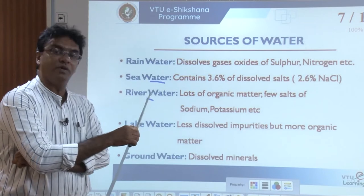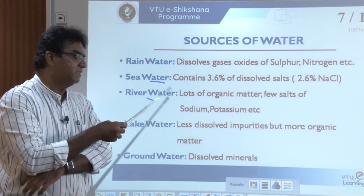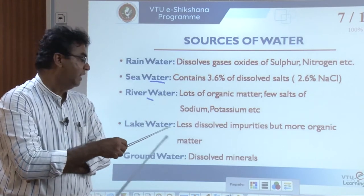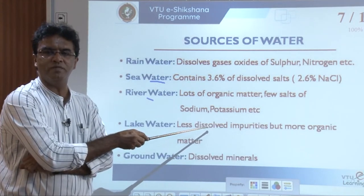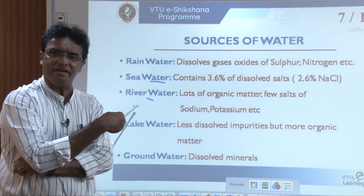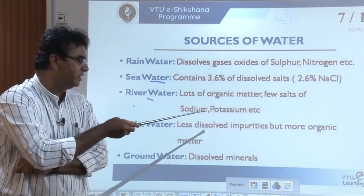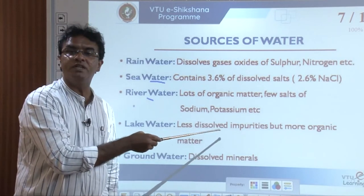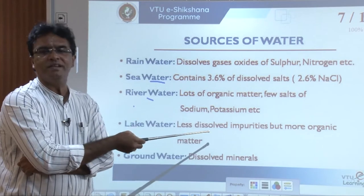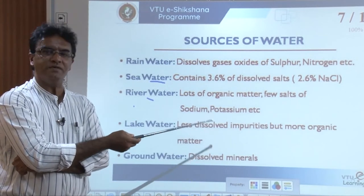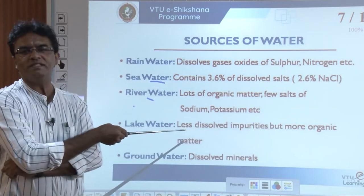Lake water, if formed from a natural source, is comparatively more pure than river water. Lake water mainly contains organic matter but less dissolved impurities, because the river flows through various areas and soils over larger distances dissolving different salts, whereas lake water contains less dissolved impurities but more organic matter — from dead trees, twigs, leaves, and aquatic life.